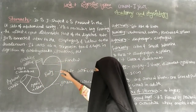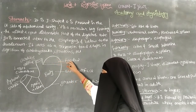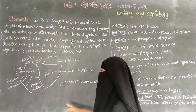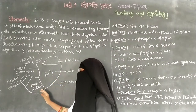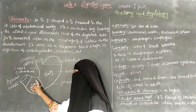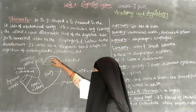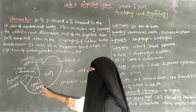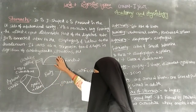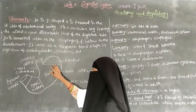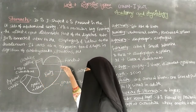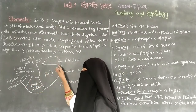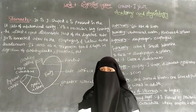The stomach consists of three parts. The first is the fundus — the upper part of the stomach. The middle part is called the body. The lower part is called the pyloric antrum. The front side is called the anterior surface and the back side is called the posterior surface of the stomach.